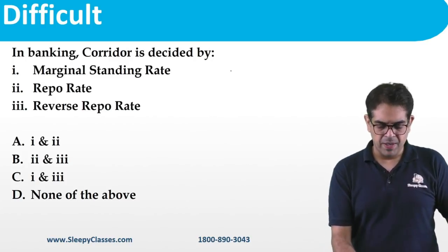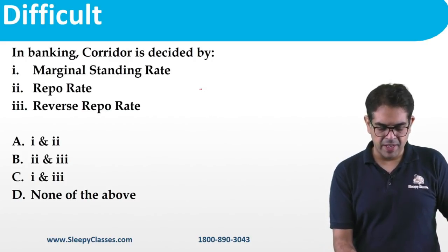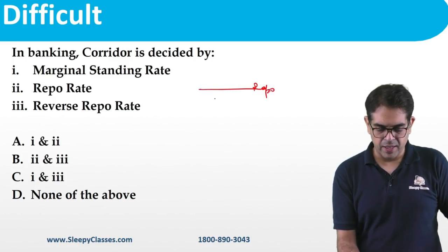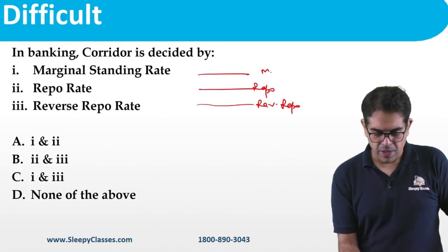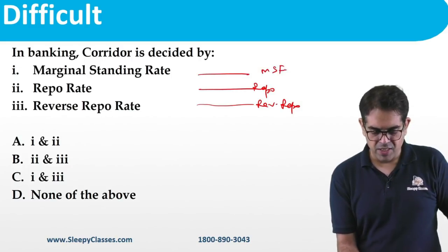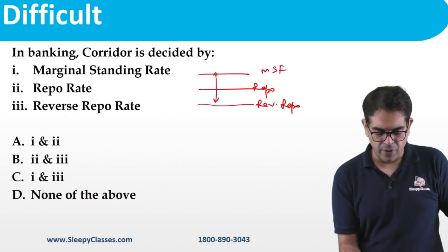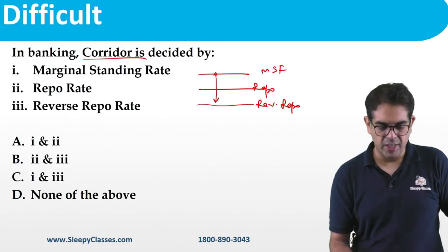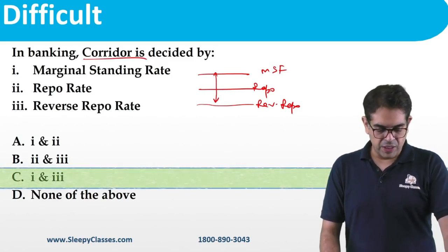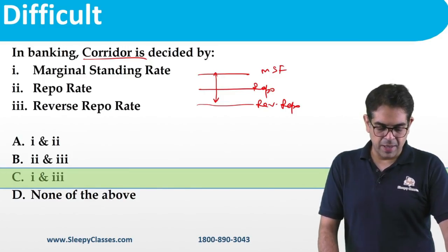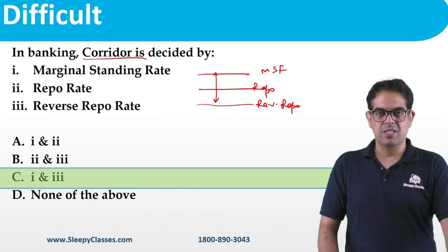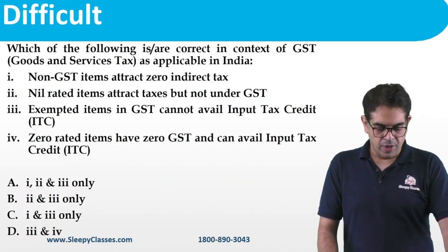Next is the interest rate corridor. The repo rate sits in the middle; reverse repo is slightly below repo rate; Marginal Standing Facility (MSF) is slightly above repo rate. The gap between MSF and reverse repo rate defines the corridor. Statements 1 and 3 should be correct. The corridor is determined by MSF and reverse repo rate, and the gap between them.